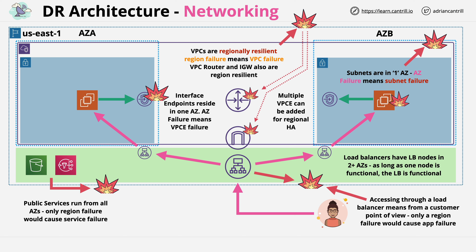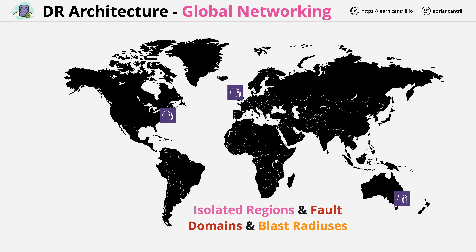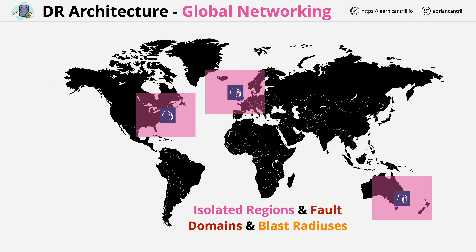Sometimes all of the availability zones within a region, or the region itself, can have problems, so your disaster recovery architecture and planning should involve using services in other regions to help mitigate this. From a networking perspective, imagine the local architecture I just stepped through — a VPC running in the US East 1 region — duplicated over two additional regions. AWS has designed their global platform as a collection of regions where each region is independent. A load balancer, for example, runs in one region only — you can't have a global load balancer, and neither can a load balancer use instances in different regions. This gives you a collection of isolated regions with separate fault domains and separate blast radiuses.